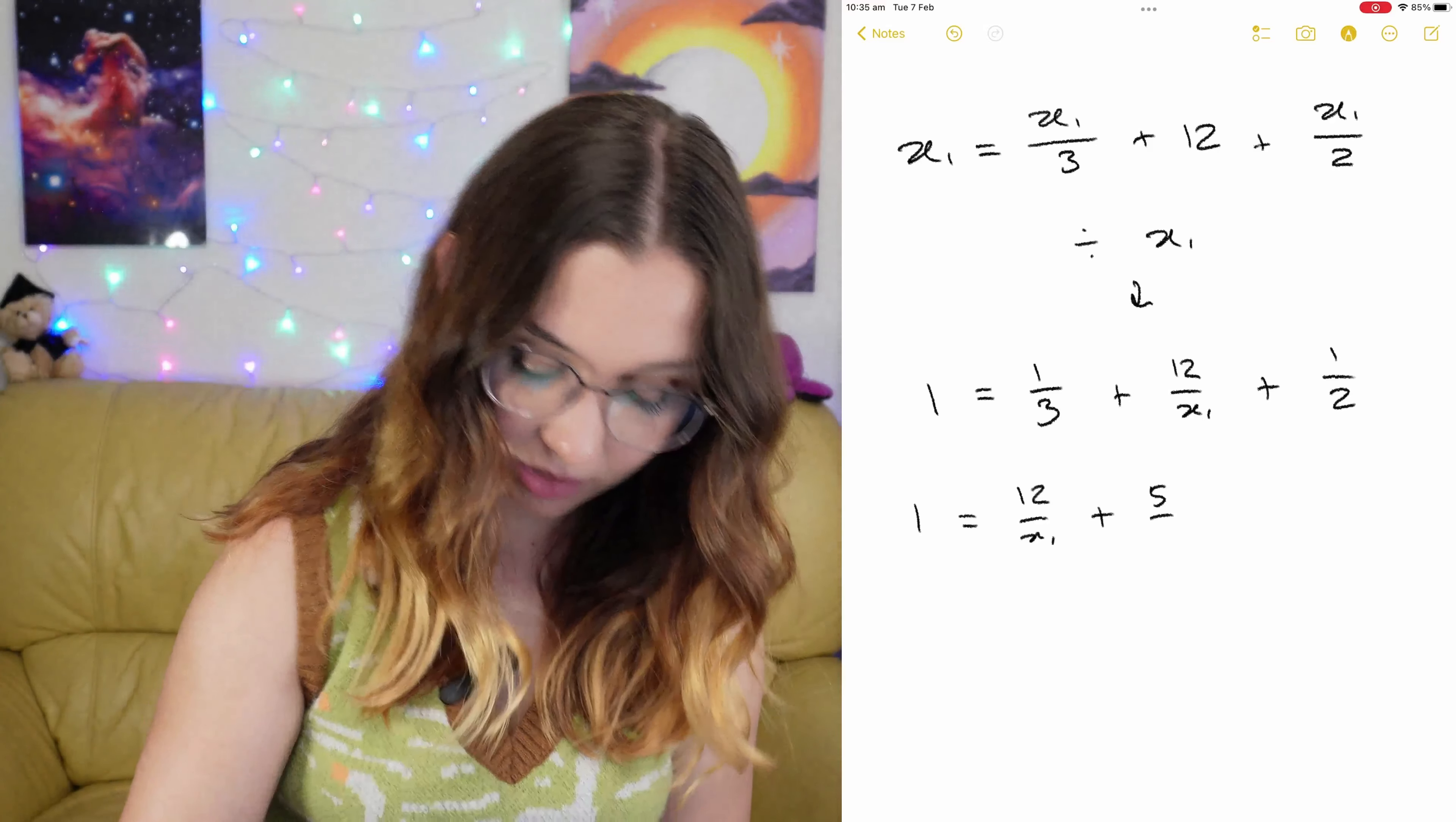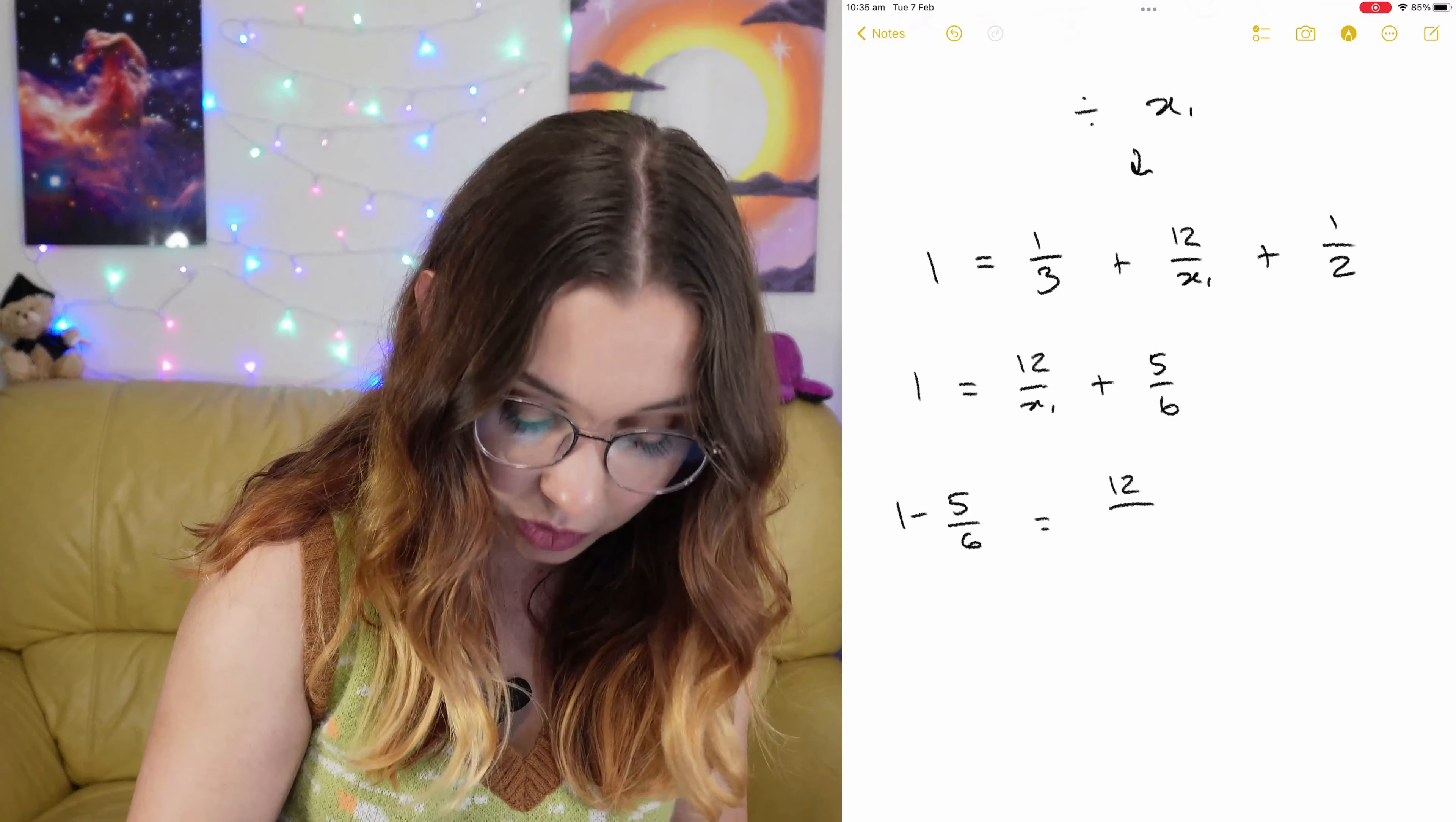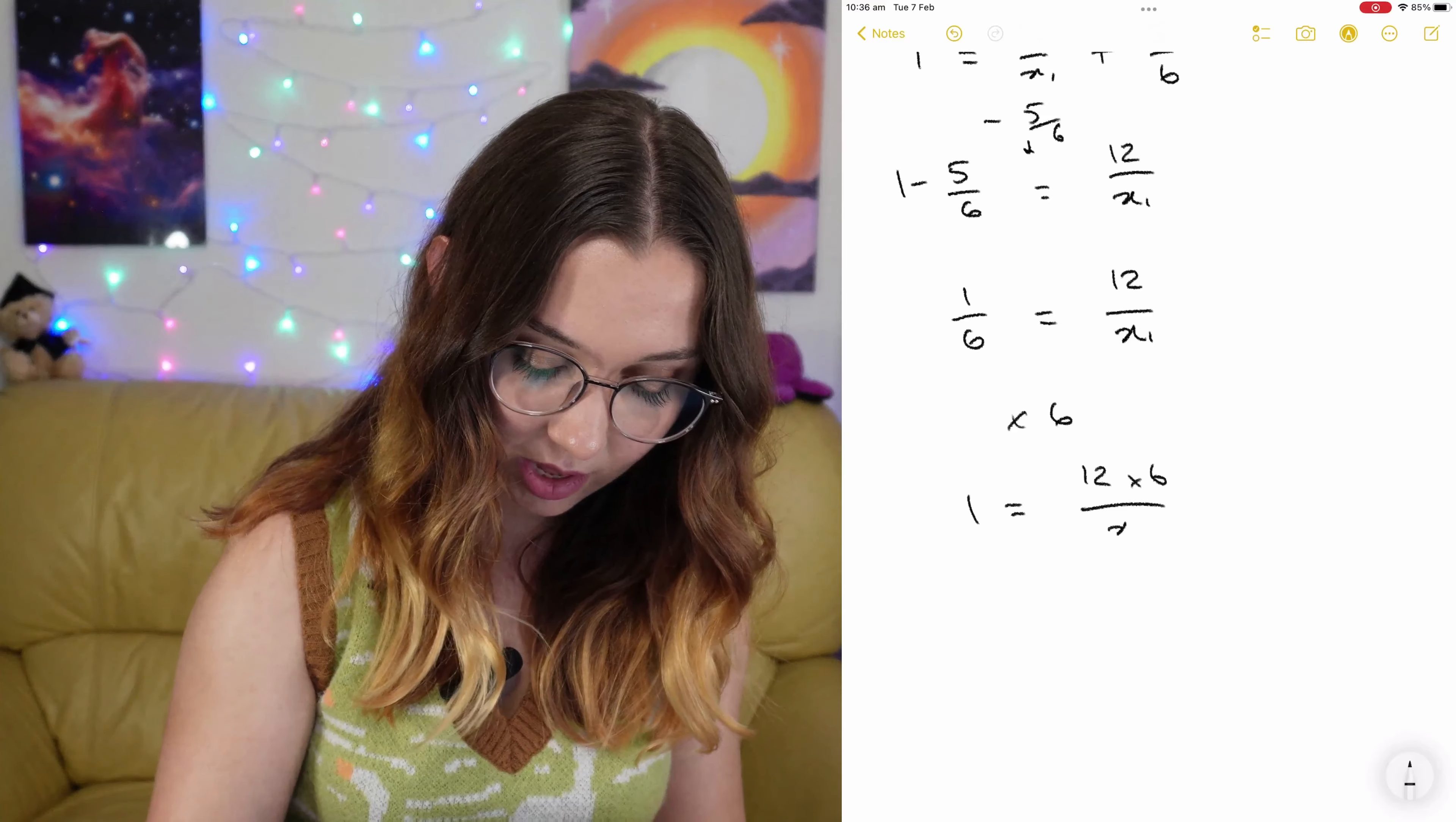So 1 is equal to 12 over x plus 5 on 6. I'm gonna minus 5 on 6 from both sides. So we get 1 minus 5 on 6 is equal to 12 divided by x1. 1 minus 5 on 6 is 1 on 6 equals 12 divided by x1. Oh, we're so close here.